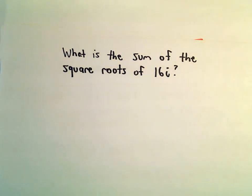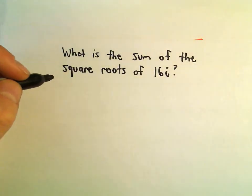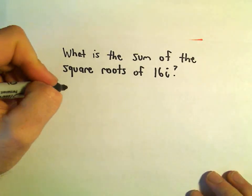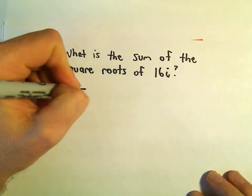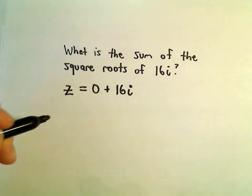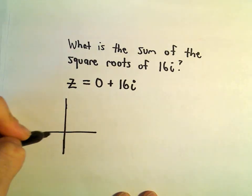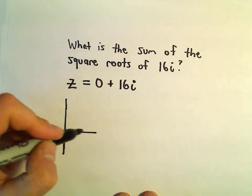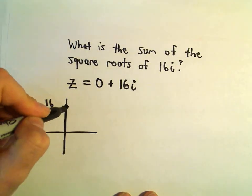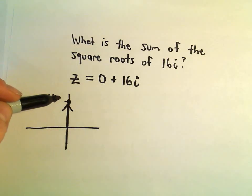So the first thing we'll have to do in order to use this formula is we need to rewrite 16i as a complex number in polar form. So we can write this as 0 plus 16i. Well if you think about graphing that, we don't really move anywhere along the real axis, but we would go up 16 units. So there would be our complex number 16i.